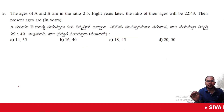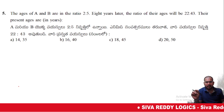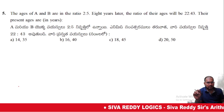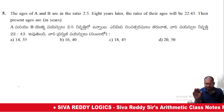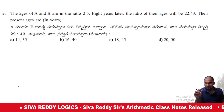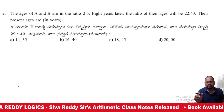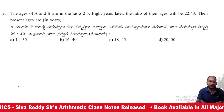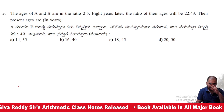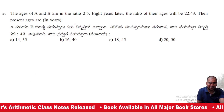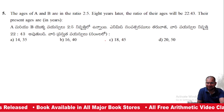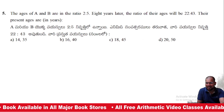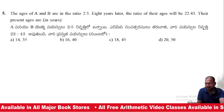The ages of A and B are in the ratio 2 is to 5. After T years, the ratio will be 22 is to 43. Their present ages are to be found. The options given are: 7 times 2 and 7 times 5; 8 times 2 and 8 times 5; 9 times 2 and 9 times 5; 10 times 2 and 10 times 5.